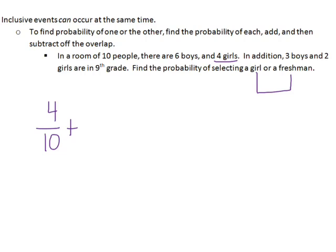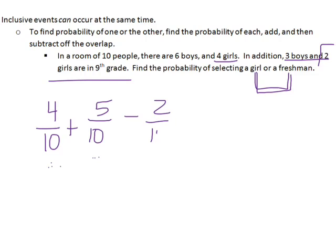Add the probability of being a freshman — there are five total freshmen — then subtract off whatever overlap. The overlap is the freshman girls. Since two girls are in the ninth grade, those two girls have been counted in both categories. So we subtract off one of the duplicates: four plus five is nine, minus two is seven, giving us seven out of ten. The probability of selecting a girl or a freshman is seven out of ten.